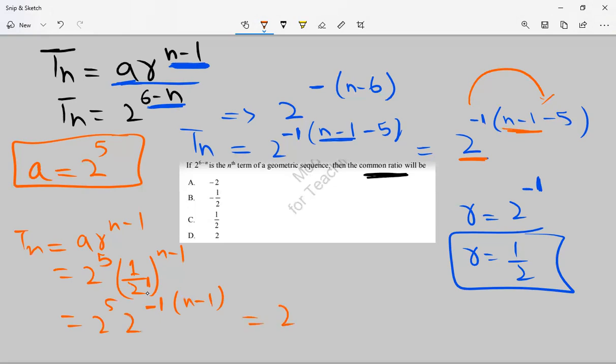Then it will become 2 raised to power 5, 2 raised to power minus N and minus minus plus 1. It will become 2 to the power 5 plus 1 is 6 minus N. The same power. It means that we have calculated exactly the right answer. Thank you.